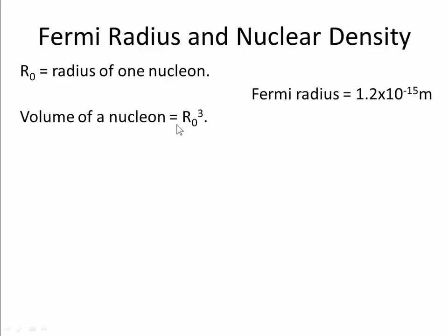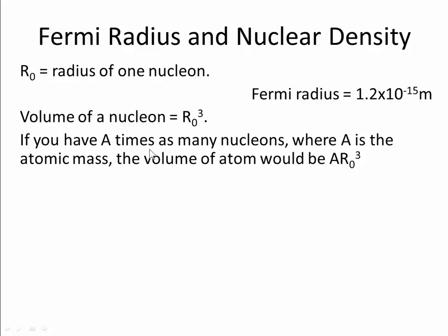Now the volume of a nucleon, let's take it as being a cube, is this value cubed. So if you have A nucleons, you're going to have A times as much volume. So it's going to be A R0 cubed.